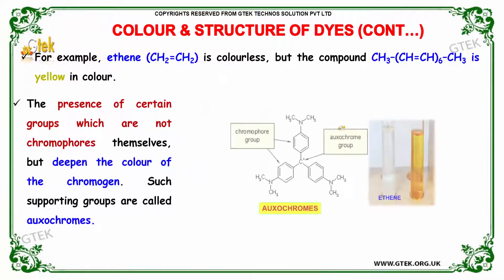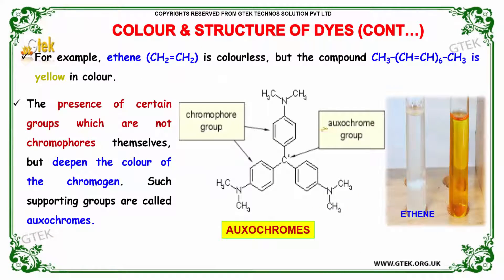For example, ethene is colorless but the compound CH3(CH2=CH)6CH3 is yellow in color.